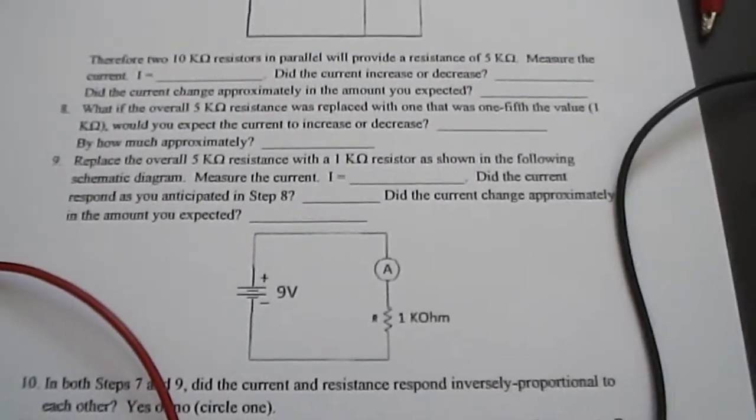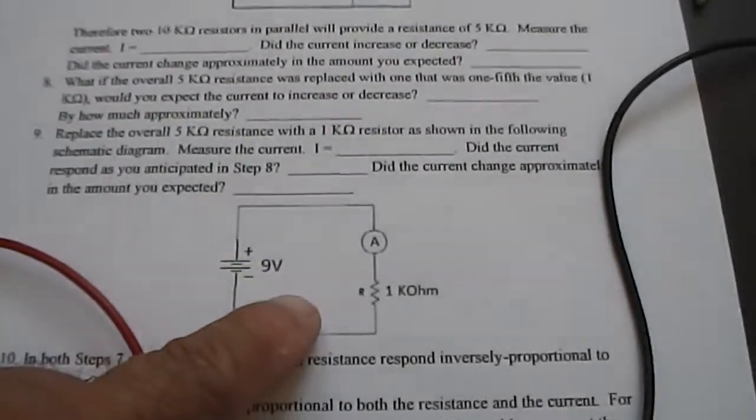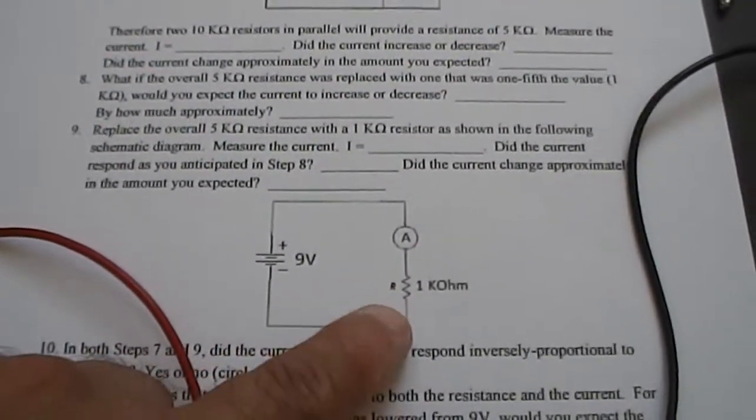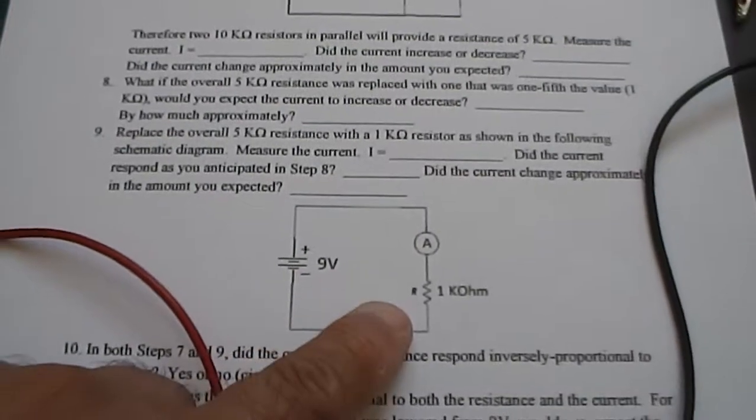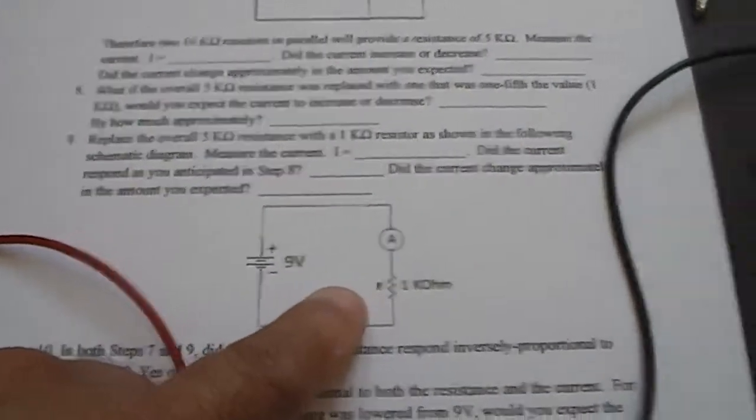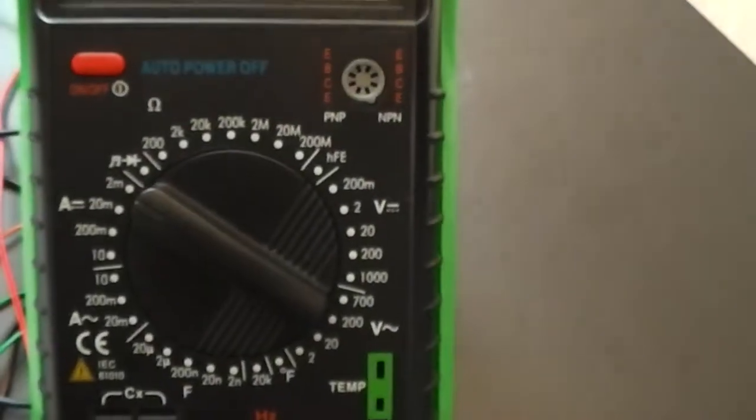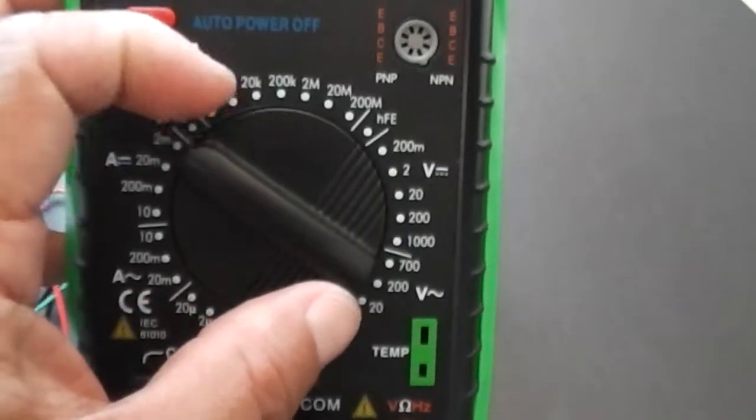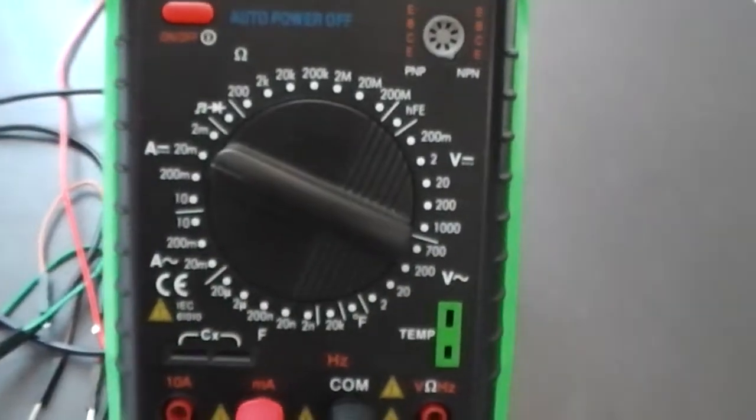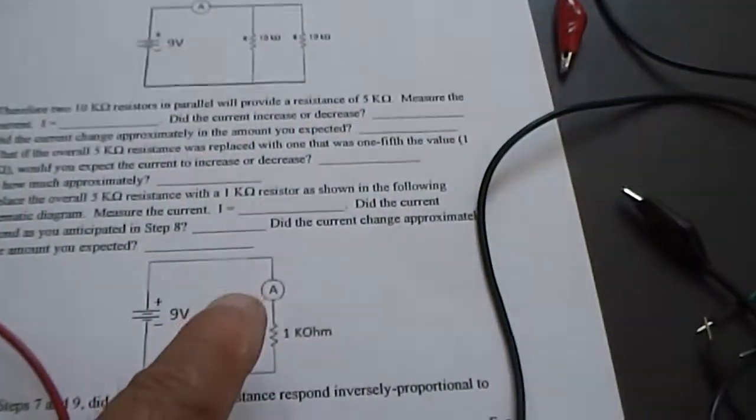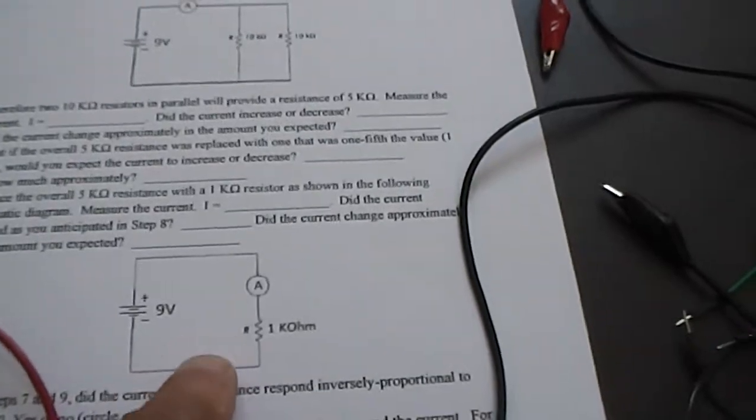In procedure number nine, we're asked to measure again the current, but this time through 9k ohms. Well, when you think about it, if you employ Ohm's law, 9 divided by 1k is going to give you 9 milliamps. So on the meter here, we definitely need to put it to a higher range setting. So we need to drop it down to, or up to, I should say, to 20 milliamps, because it needs to be able to handle at least the 10 that we anticipate in the circuit here.